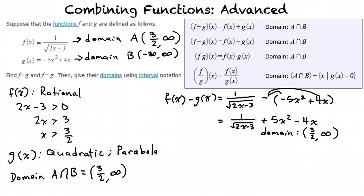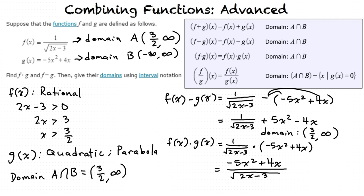Okay, so now if I multiply f and g, the result is 1 over the square root of 2x minus 3 times negative 5x squared plus 4x, right? Yes, now how can we simplify this? I can write negative 5x squared plus 4x as the numerator, and square root 2x minus 3 as the denominator. Can it be simplified more? No, it cannot. Write this answer along with a domain of 3 halves to infinity, and you are done with this problem.